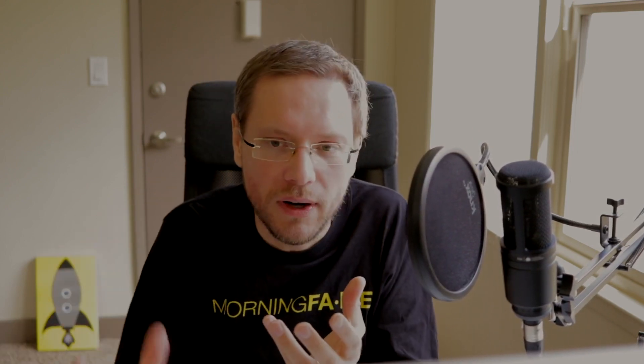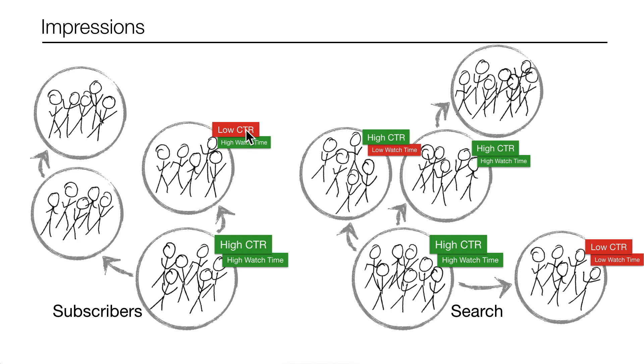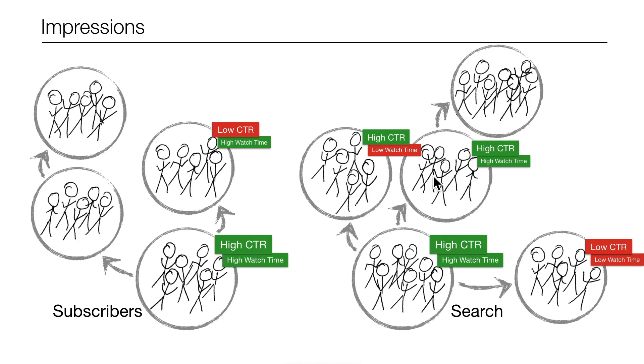But it doesn't cascade indefinitely — not all people enjoy your videos, and that's natural. For example, if it shows to more people and they have low click-through rate, or high click-through rate but low watch time, or both low, it stops promoting to more people. If people don't enjoy it, the cascade stops. But if they enjoy it again, it promotes to even more people. There's no workaround — you have to create a great video that people really enjoy. The better you do it, the more the suggested videos algorithm cascades to more and more people, and your video gets more outreach.